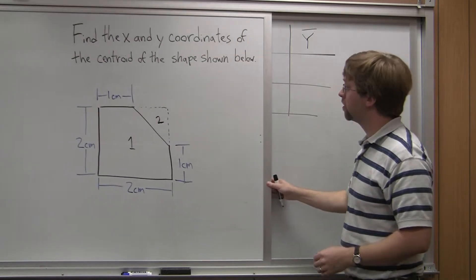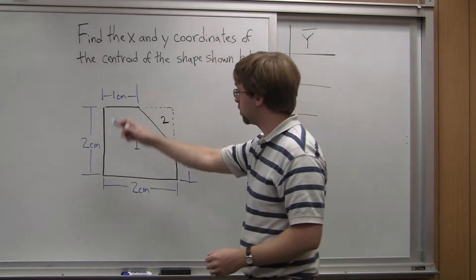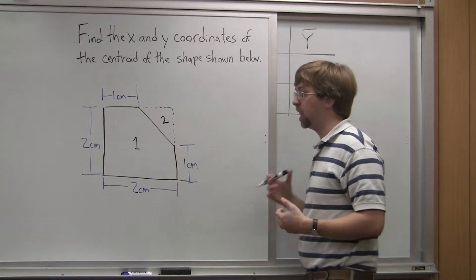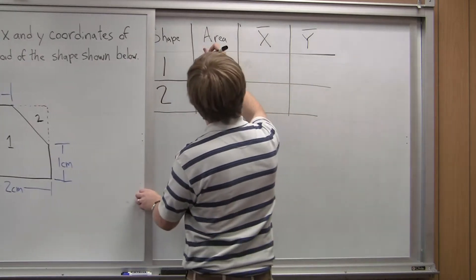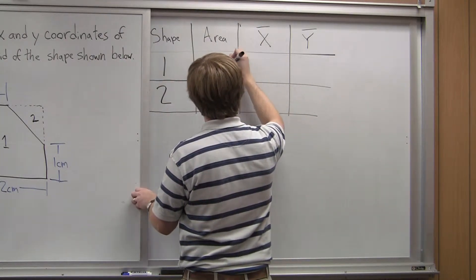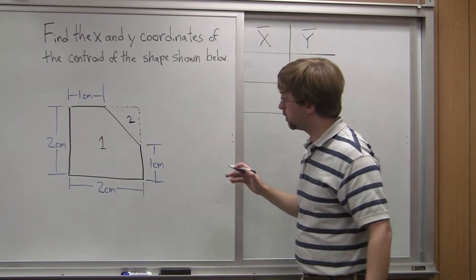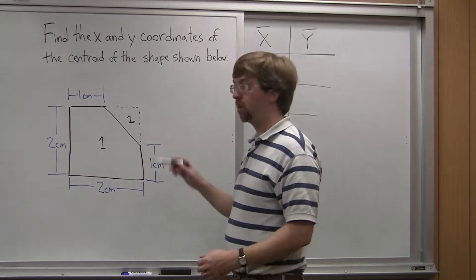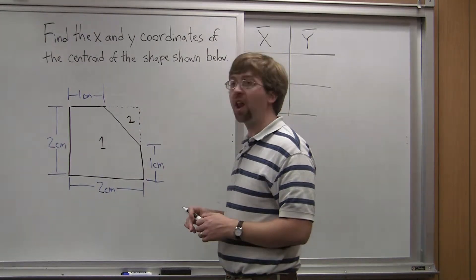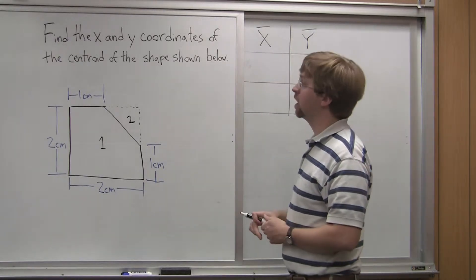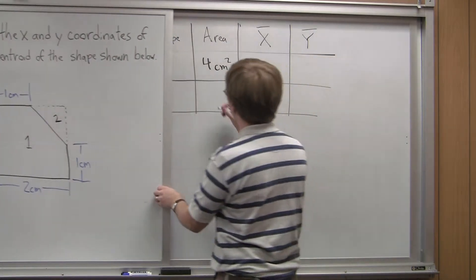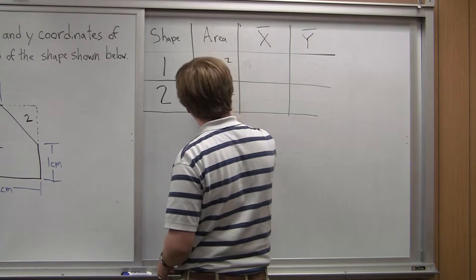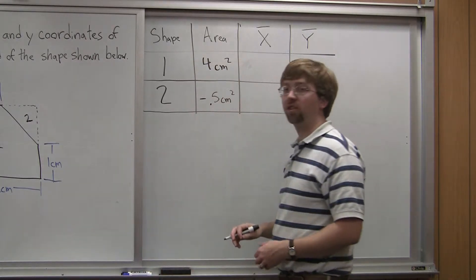Let's look at the area first. The area of the overall square is two centimeters by two centimeters, so two times two gives us four centimeters squared. For the triangular cutout, it's one centimeter by one centimeter — one centimeter is the base, one centimeter is the height — one-half base times height. So one-half times one times one gives the triangular cutout an area of 0.5 centimeters squared. And again, that's going to be negative because it's a cutout.